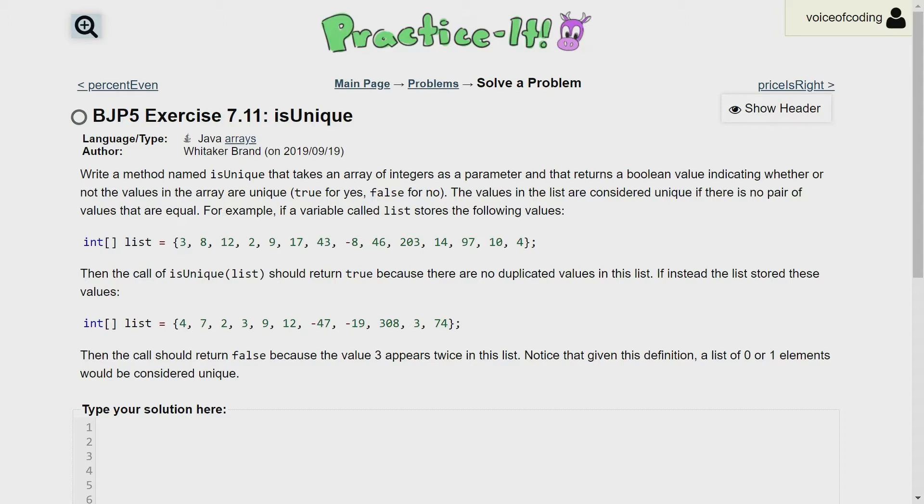Notice that given this definition, a list of 0 or 1 elements would be considered unique. So the problem is essentially asking us to take a look at an integer array and return true if there are any numbers that are the same and false if otherwise.